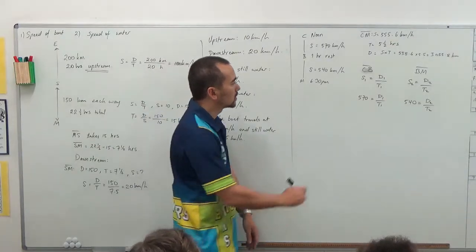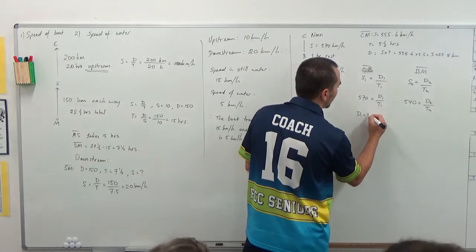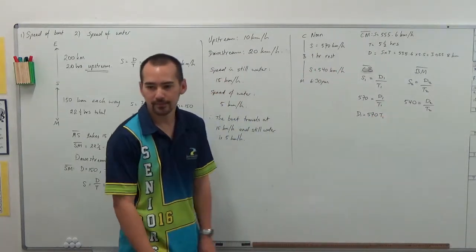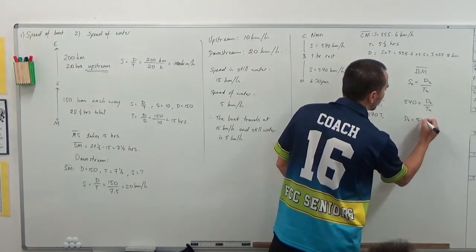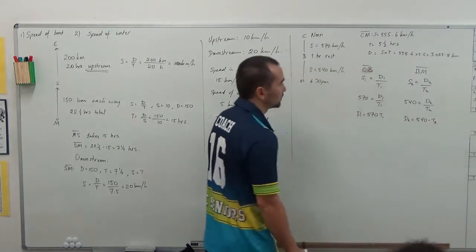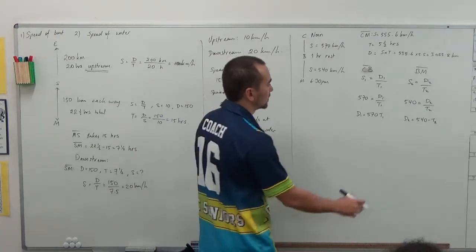Alright. So, couldn't we say here that D1 is equal to 570 times T1? Yeah. And over here, D2 is equal to 540 take away T2. Do you mean times? Ah, sorry. Yes, thank you.